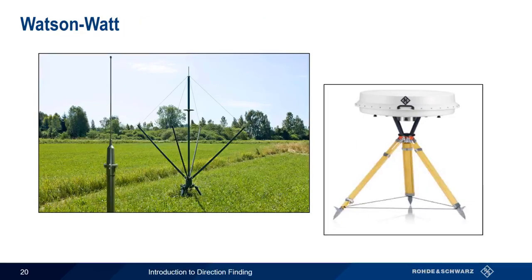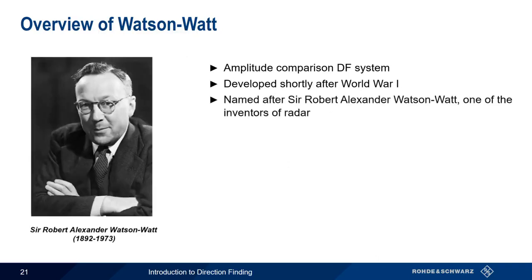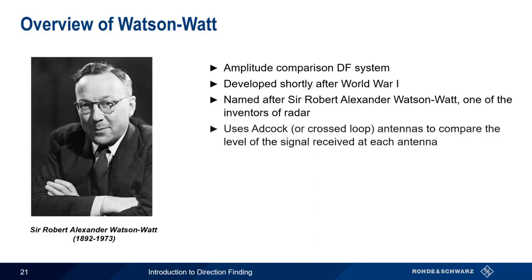Doppler can be classified as a frequency-based direction-finding methodology, in that it uses changes in frequency to determine the direction or bearing towards the source. The next methodology we'll be looking at is something called Watson-Watt, which is an amplitude-based DF system. More precisely, Watson-Watt is an amplitude comparison system. It's one of the older DF methodologies, having been developed shortly after the First World War. The methodology is named after its creator, Sir Robert Alexander Watson-Watt, who was one of the pioneers in the field of radar. The Watson-Watt direction-finding methodology requires the use of a special type of antenna, either an ADCOCK antenna or a cross-loop antenna.